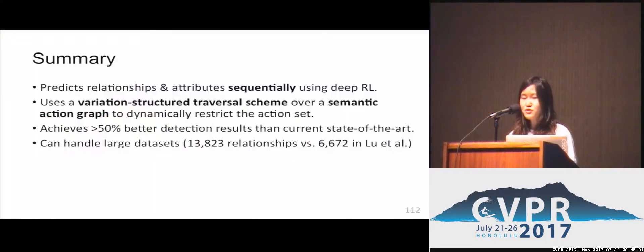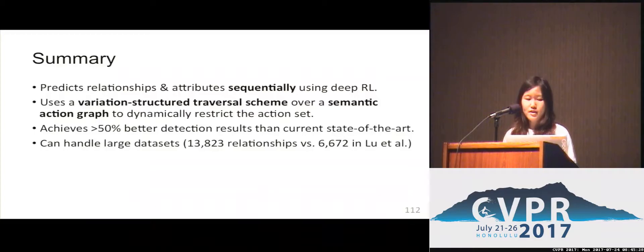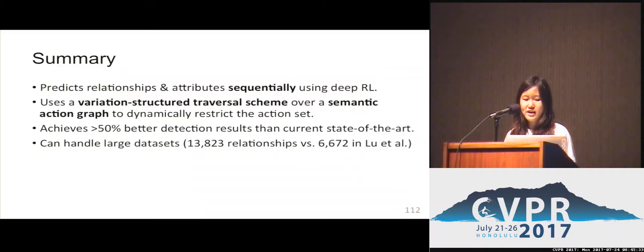In this talk, I introduced a novel algorithm that predicts relationships and attributes sequentially using deep RL. It uses a variation structured traversal scheme that dynamically restricts the action set in each step and speeds up learning.